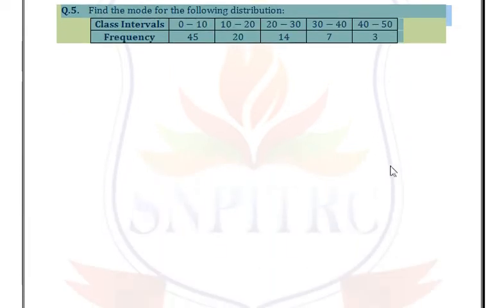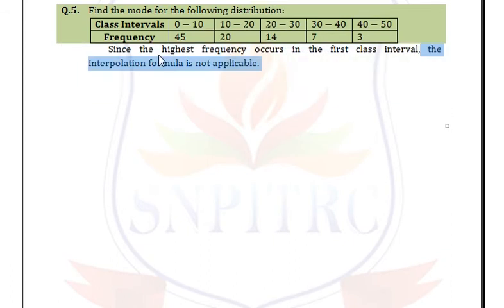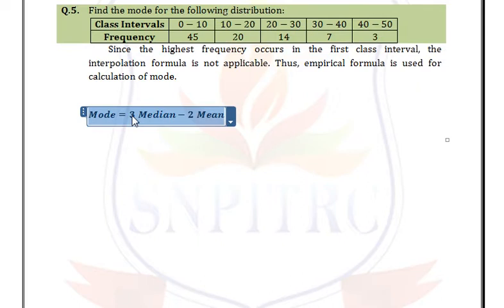One more example. Here we can see that the maximum frequency is 45, and it is in the first row — the top value is our maximum frequency. Since this is fm, there is no preceding frequency f1, so we have to use the empirical formula: Mode = 3 × Median − 2 × Mean. We need to find mean and median.